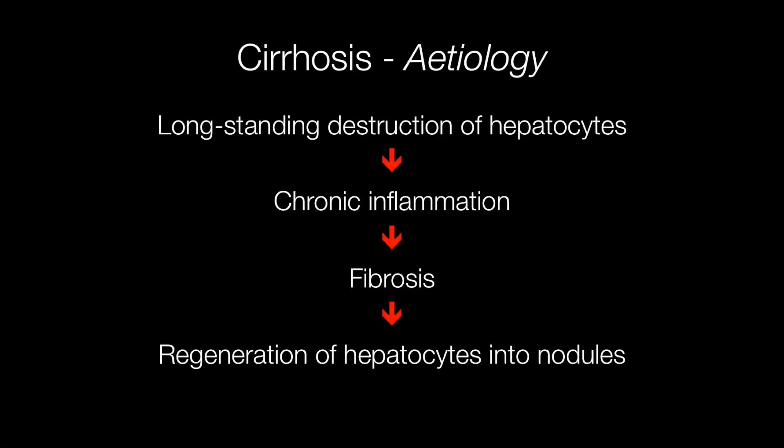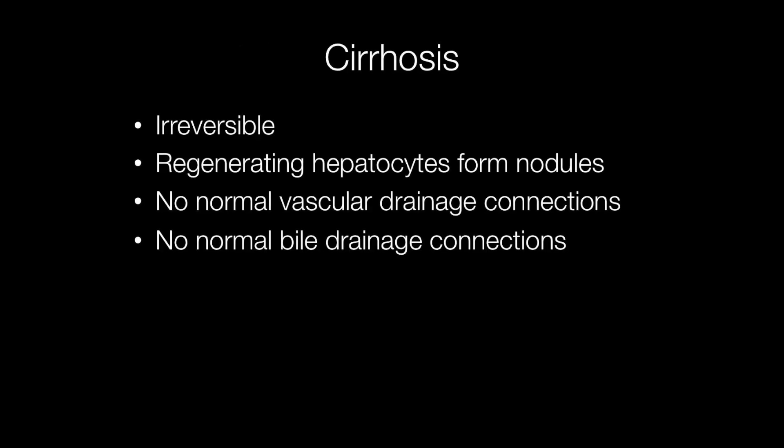Cirrhosis is effectively the end stage of a long-standing assault on the liver. There is sustained destruction of hepatocytes, which results in chronic inflammation. The chronic inflammation stimulates fibrosis, and the damage to the hepatocytes results in regeneration into nodules. The change is irreversible — the nodules do not have normal vascular drainage, so normal vascular connections are lost, and there is no normal bile drainage because those connections are also lost.